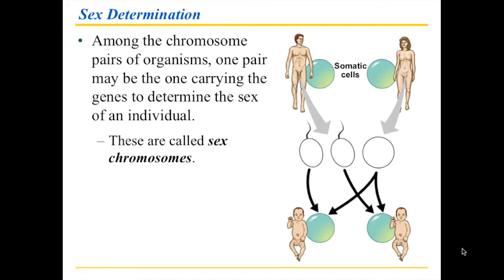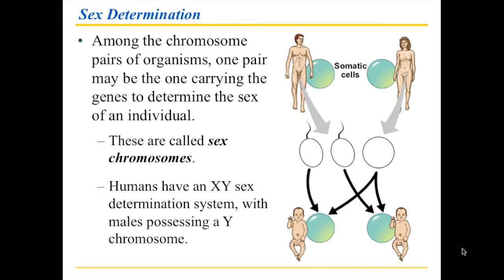In humans, we already know that there are sex chromosomes, and that humans have an XY sex determination system in which males possess the Y chromosome. A male has 44 chromosomes we call autosomes, and two sex chromosomes, an X and a Y. When a male produces sperm, there are two possibilities: either X sperm or Y sperm. The proportion of X sperm decreases as the male ages.